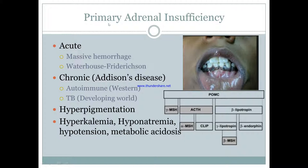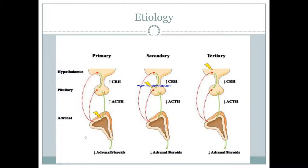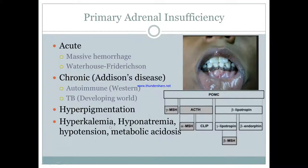One of the main things that distinguishes primary from secondary and tertiary is hyperpigmentation. To understand why, in primary adrenal insufficiency, your adrenals are messed up so you're not making cortisol. ACTH is elevated because the pituitary is trying hard to stimulate cortisol production. ACTH comes from a precursor molecule called POMC, which gets cleaved into ACTH and MSH — melanocyte-stimulating hormone — which stimulates melanocytes to cause hyperpigmentation of the gingiva and skin.